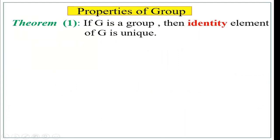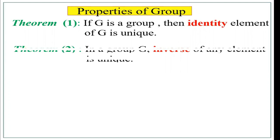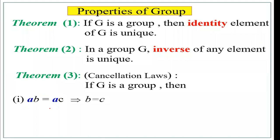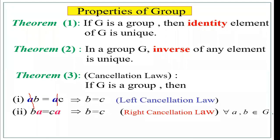Now we have some properties of groups. The first property: if G is a group, then the identity element of G is unique. Similarly, in a group G, the inverse of any element is unique. Cancellation law plays an important role: if G is a group, then AB equals AC implies B equals C — here A cancels from the left, leaving B and C. This is called the left cancellation law.